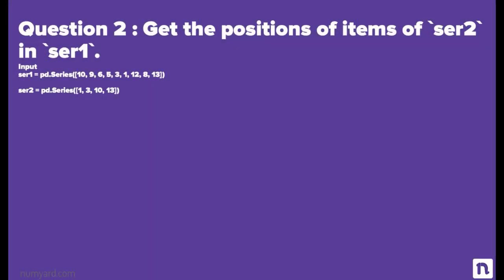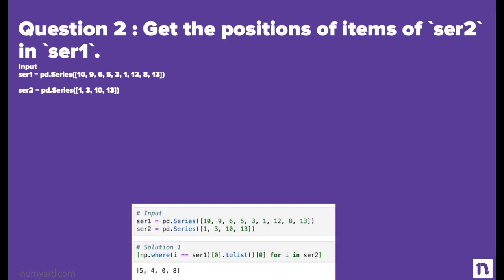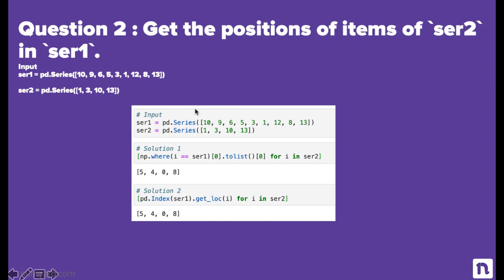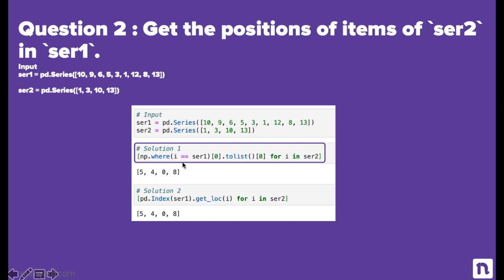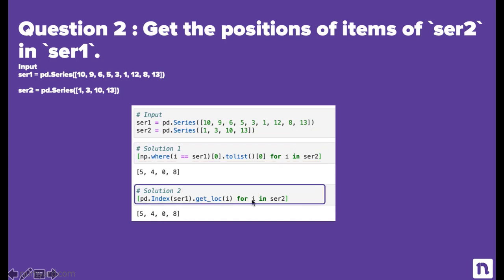Let's look at the second question. The question is: get the position of items of series two in series one. The input is two series, ser_one and ser_two. The pandas dot series function is used to create the series. Let's look at the solution. In the first cell, I have written the input — series one and series two. Then I am presenting two solutions. One is using numpy dot where function, and another is using the pandas index and get_loc function. I am using list comprehension along with numpy.where and dot tolist function in solution one, and pandas Index.get_loc in solution two.